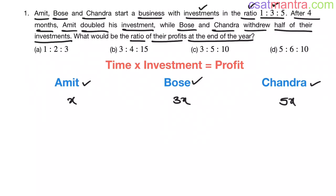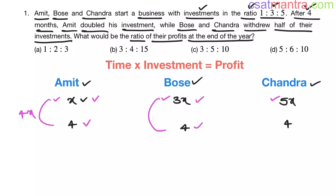Amit invested this amount for 4 months. After 4 months he doubled his investment, but for the first 4 months the investment was the same. The same goes for Bose and Chandra — their investments remained the same for the first 4 months. So their profits for this period are: time × investment = 4x for Amit, 12x for Bose, and 20x for Chandra.